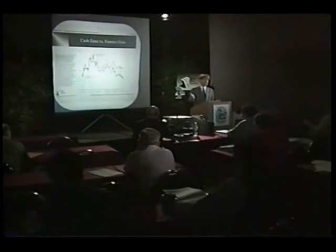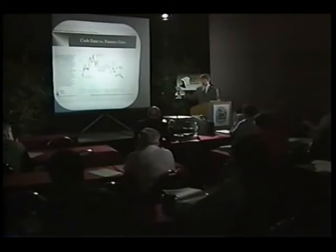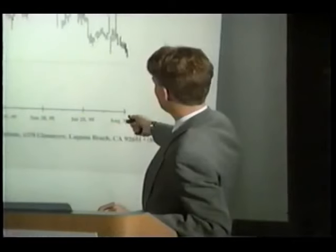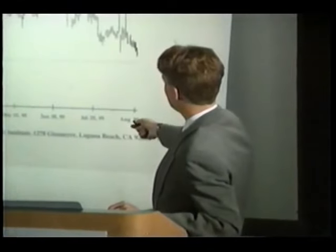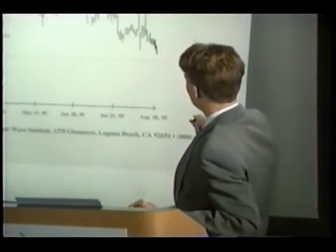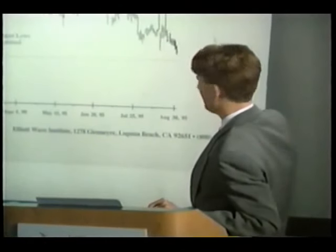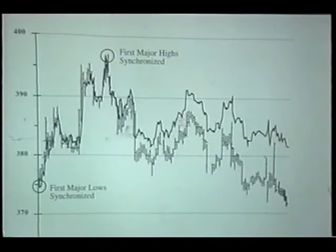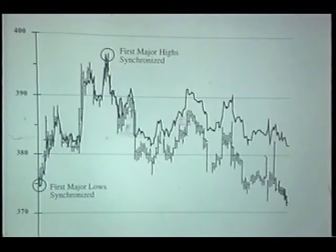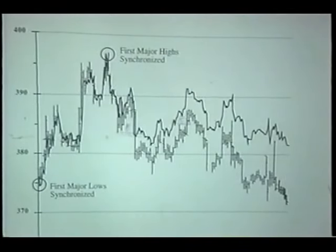Another serious, serious problem that occurs from following futures charts is the complete unreliability of support or resistance. If you follow the cash data — which is the dark black line — let's say you put a support line across here and you purchased that physical gold. Obviously, the support line held all the way across. If you did the same thing on the futures chart, it held possibly here, but then it broke several times thereafter. So that support you thought was real really wasn't real.